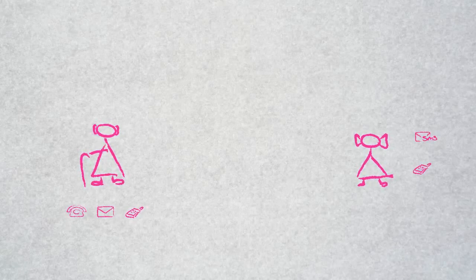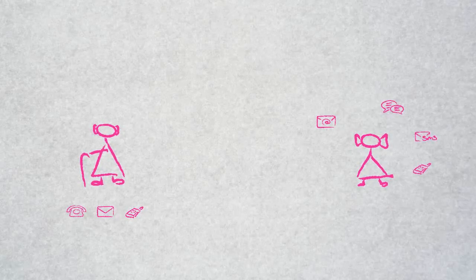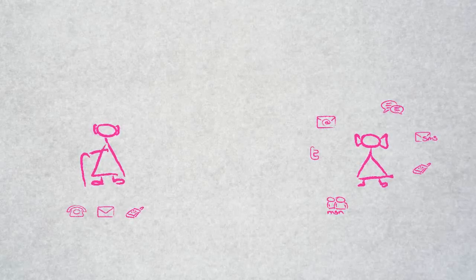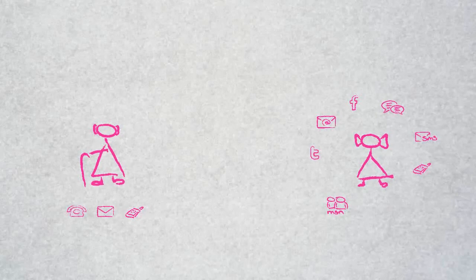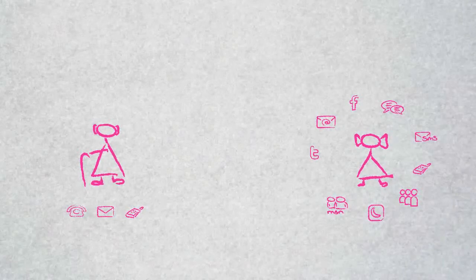Whereas Lea writes short messages, emails, uses different chat services, is twittering, updates her Facebook status regularly, maintains a MySpace website, comments pictures until late and calls her friends on Skype.